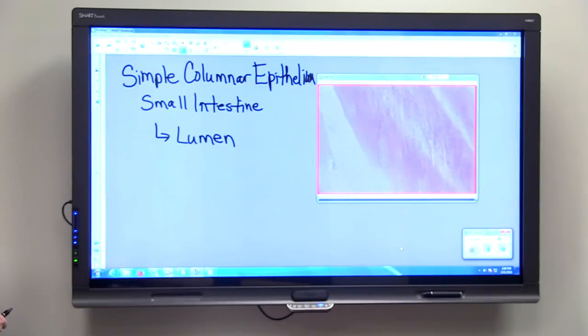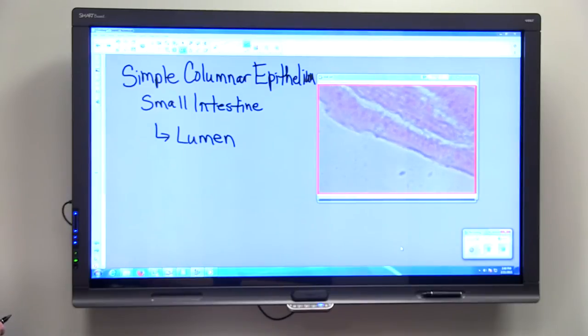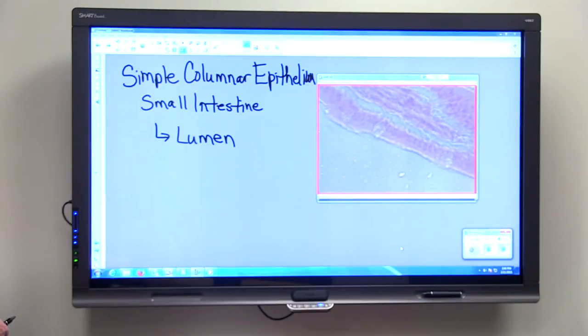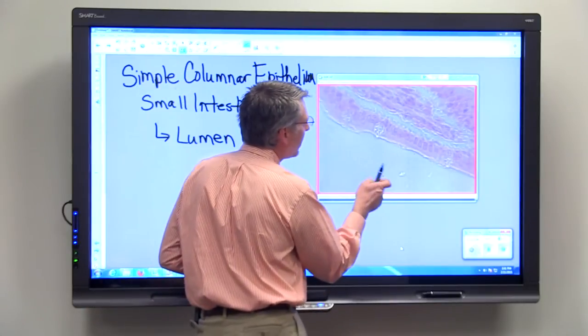Let's scroll around and see if we can find another area where we may be able to see the nuclei a little better. This is all about how the slide is made. When this slide was made, a small intestine, probably from a mouse, was cross-sectioned. Here you can see the tissue a little better.